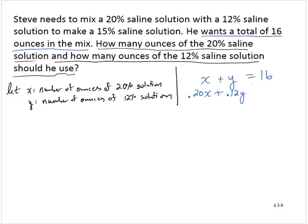The amount of salt in the first solution plus the amount of salt in the second solution has to be the same as the amount of salt in the mixture. So we mix them together, and in the end, we need 15% of the total ounces. So 15% of 16, and there's our system of equations.